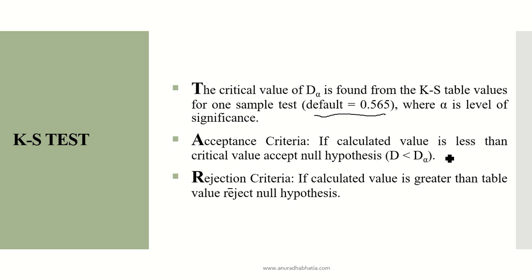If the calculated value D is less than the critical value D-alpha, then we accept the null hypothesis — that is, whatever we want to prove is accepted. If the null hypothesis is not accepted, then it is rejected: if D is greater than D-alpha, then the null hypothesis is rejected and the alternate hypothesis is accepted.